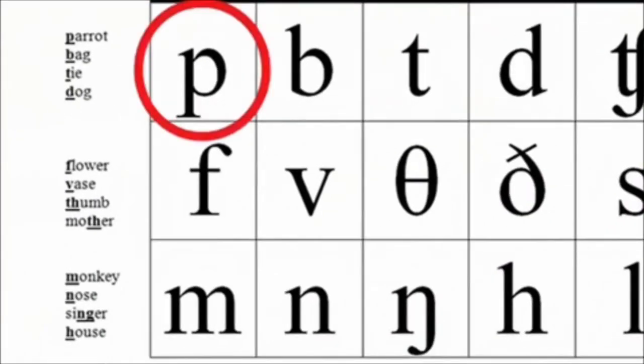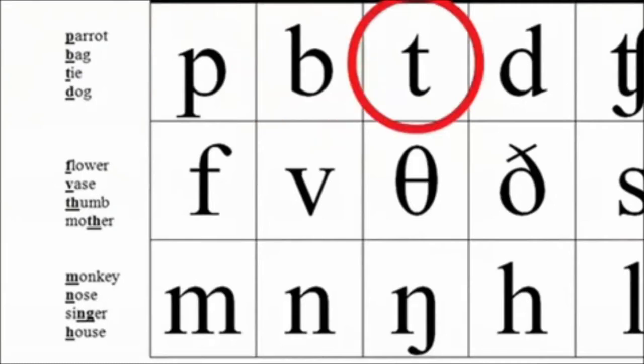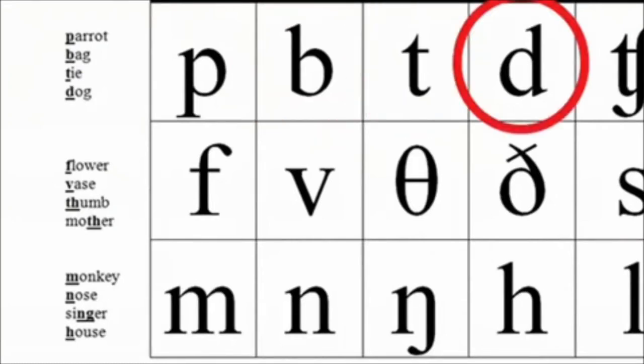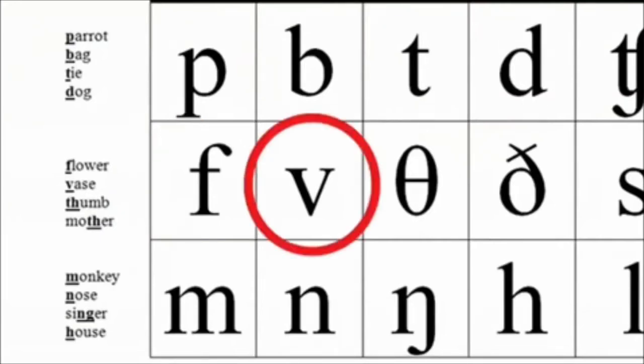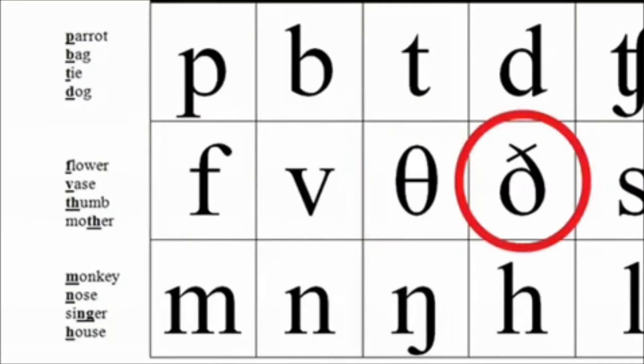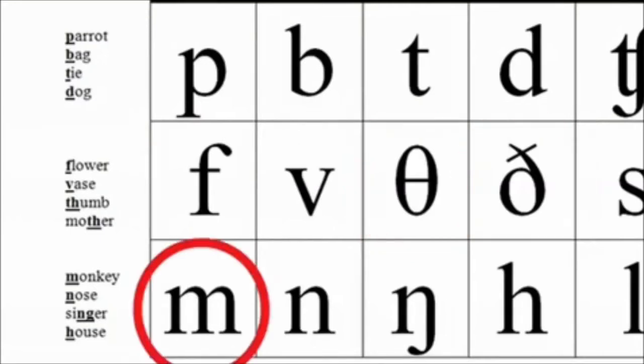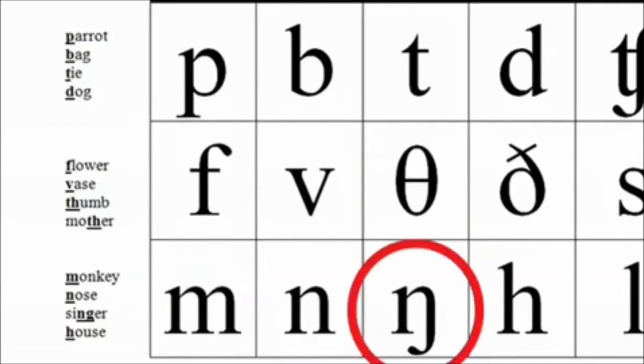p p, b b, t t, d d. θ thumb. ð mother. m monkey. n nose. ŋ sing.